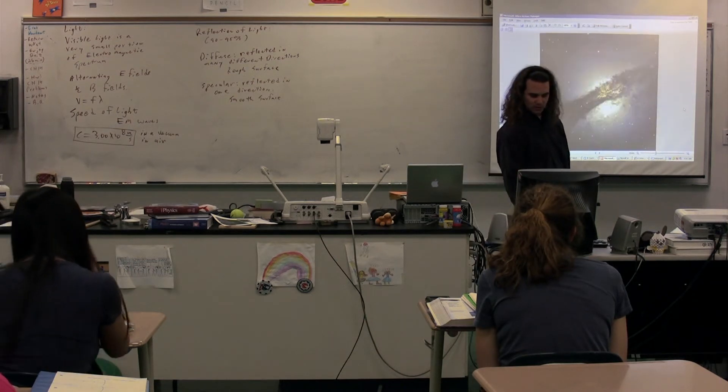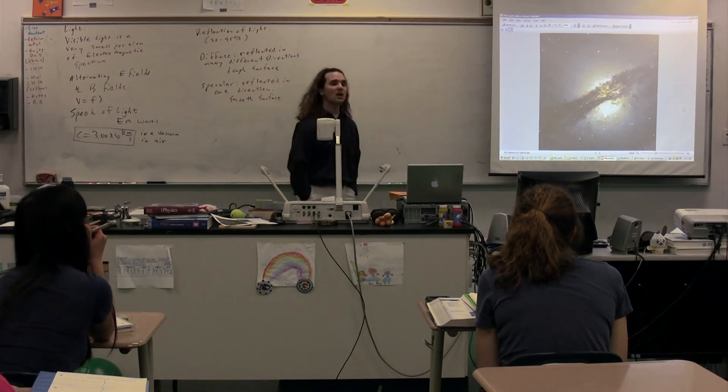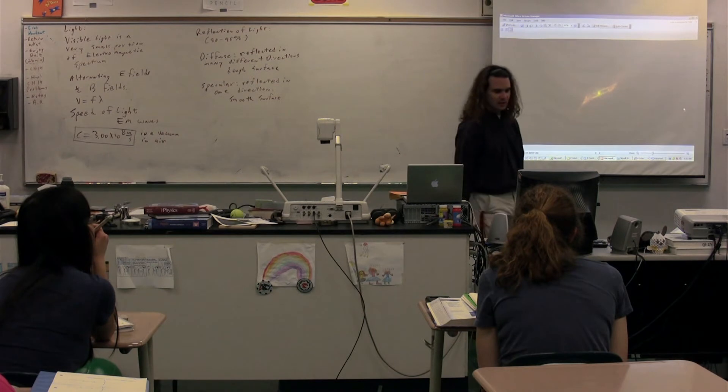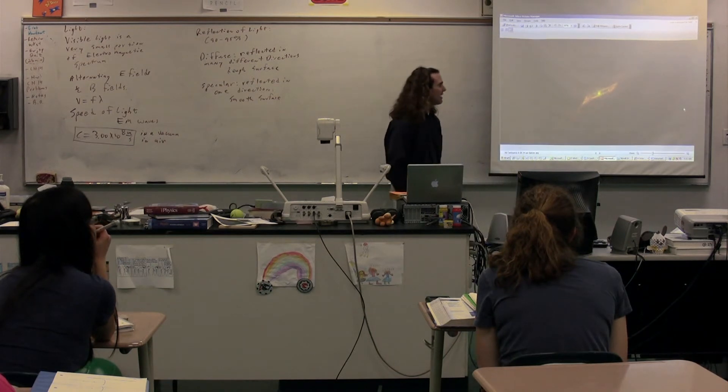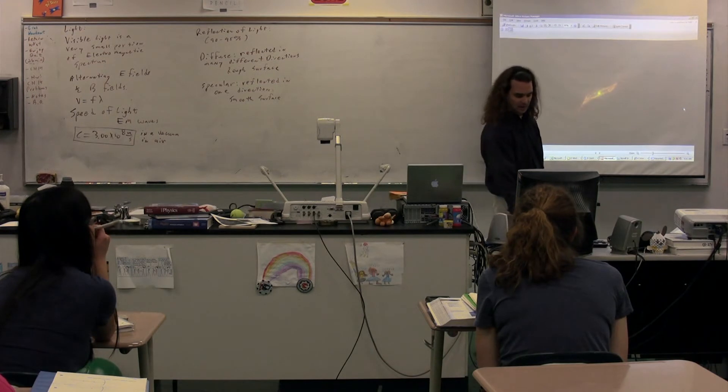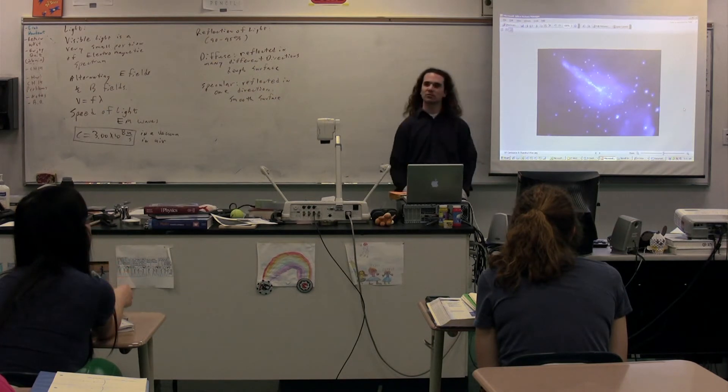We'll talk about the black hole in just a moment. Now, this is a picture of Centaurus A in the optical range. This is a picture of the infrared light coming off of Centaurus A. And this is a picture of the X-ray spectrum coming off of Centaurus A.